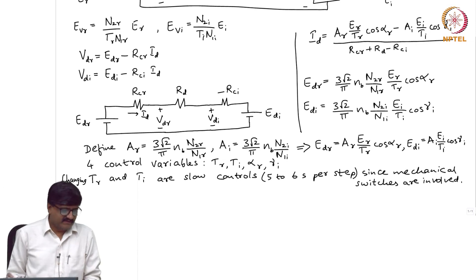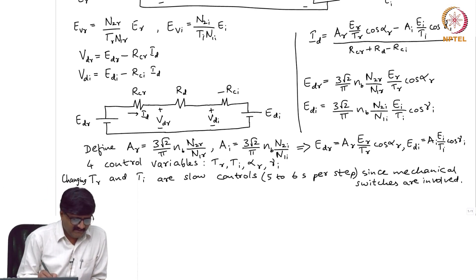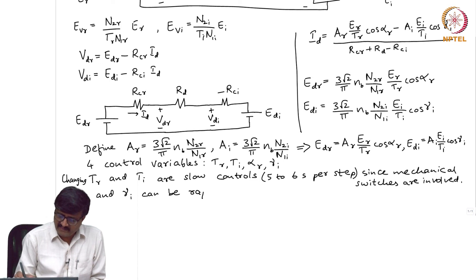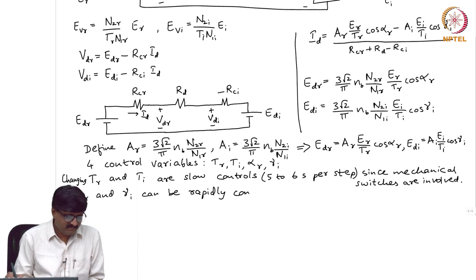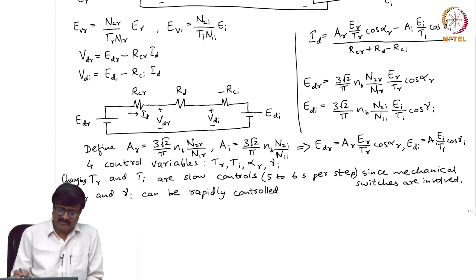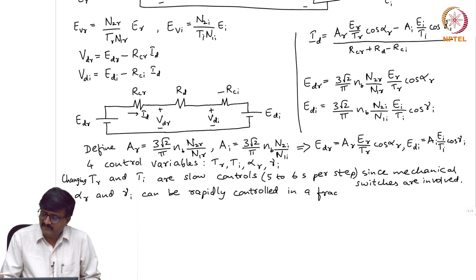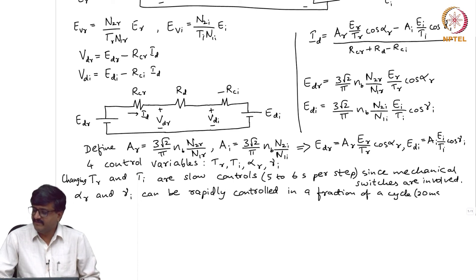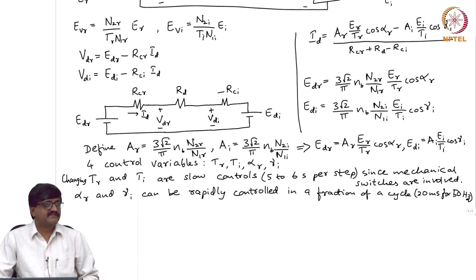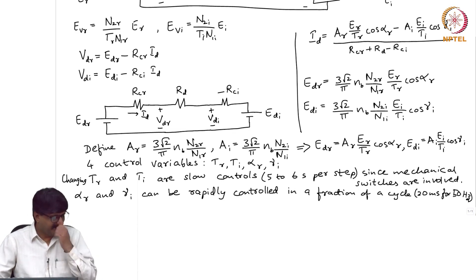Alpha_R and gamma_I can be rapidly controlled. When we talk about controlling alpha_R or gamma_I, the time required is not in seconds but a fraction of a cycle. For a 50 Hz system, one cycle is 20 milliseconds, so changes are on the order of tens of milliseconds — much smaller and hence much faster than the mechanical tap controls.